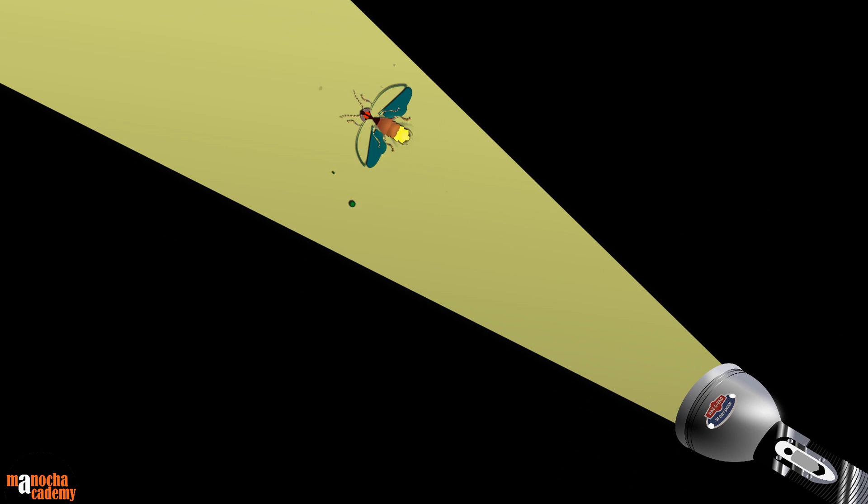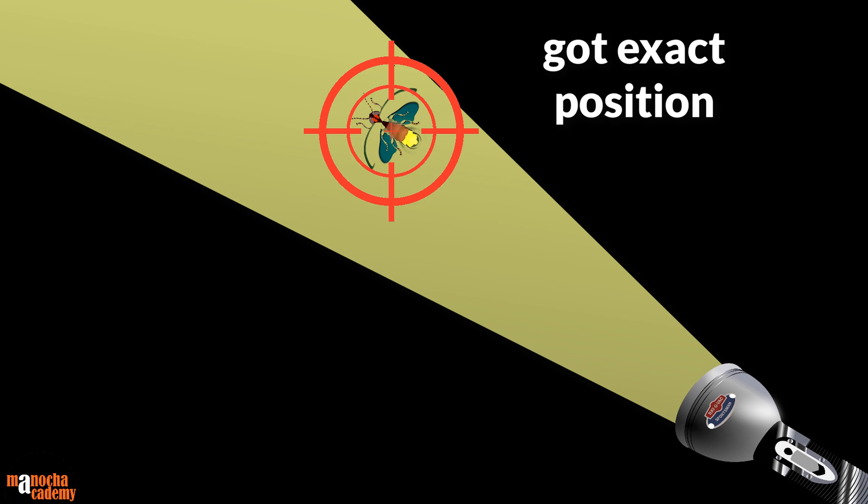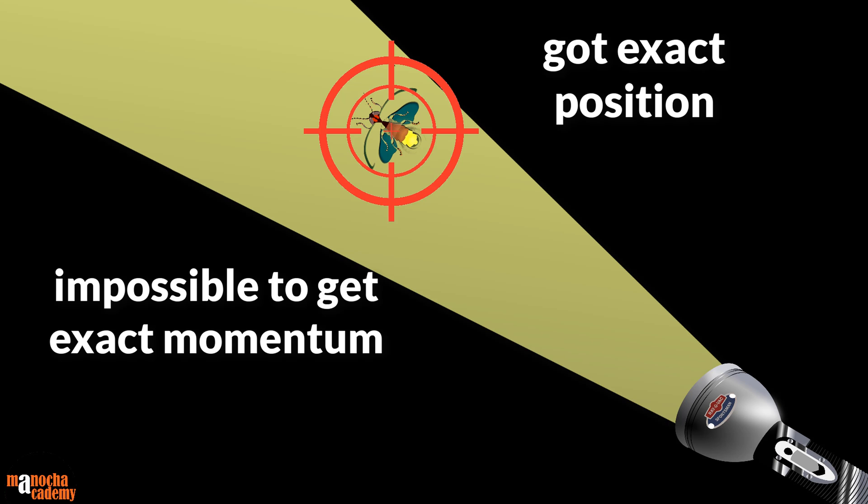Since the room is dark, to find the exact position of the firefly you will have to shine a torch on it. With the torch light on, you can clearly see the position of the firefly — but because of the bright light from the torch, the motion of the firefly gets disturbed. So you do not get an accurate measurement of its actual velocity or its original direction when it was flying in the dark.